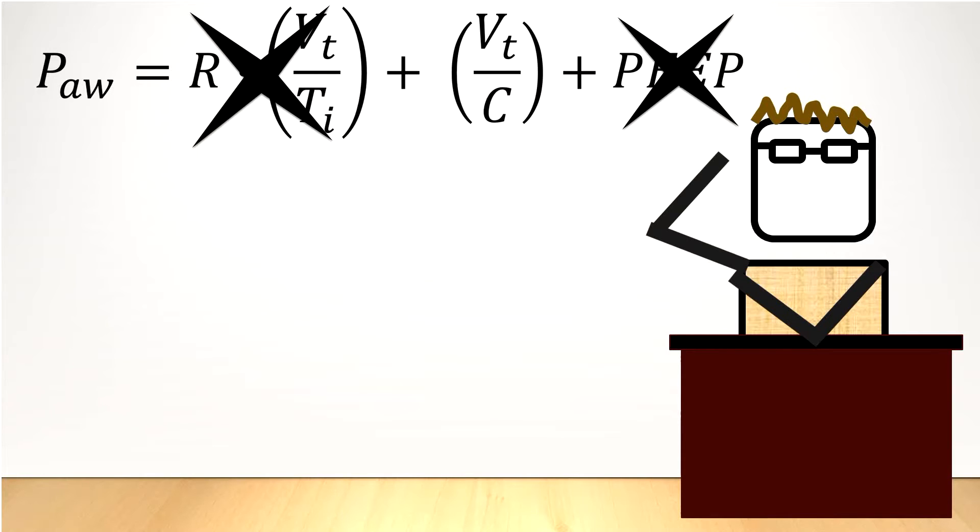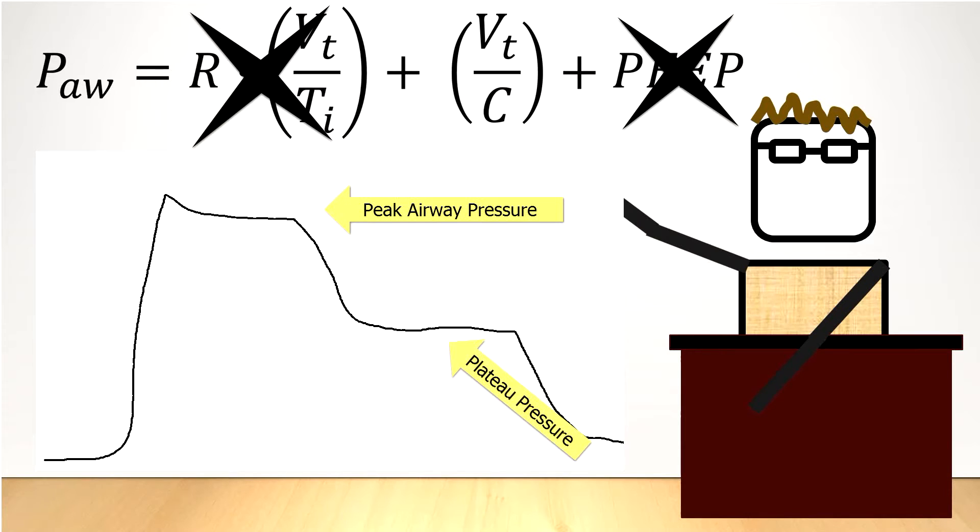When you look on the screen, you can see that there's a gap between the peak airway pressure and the plateau pressure. Put in another way, this is the pressure contributed to the total airway pressure by the airway component, which we've removed by the inspiratory pause.